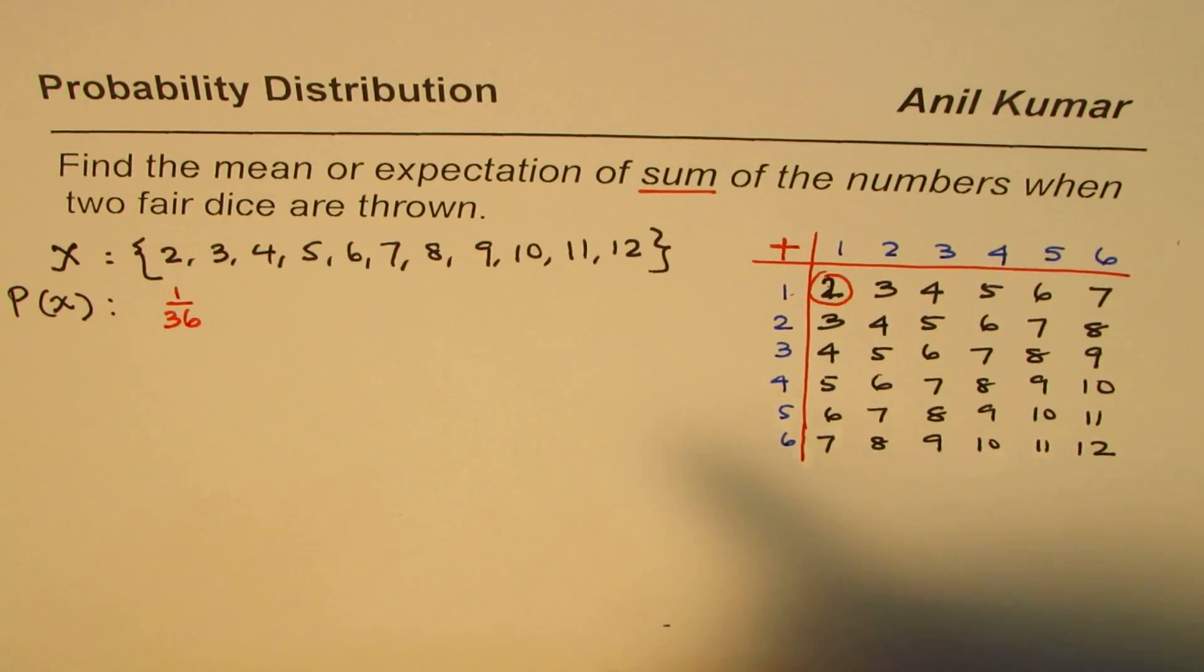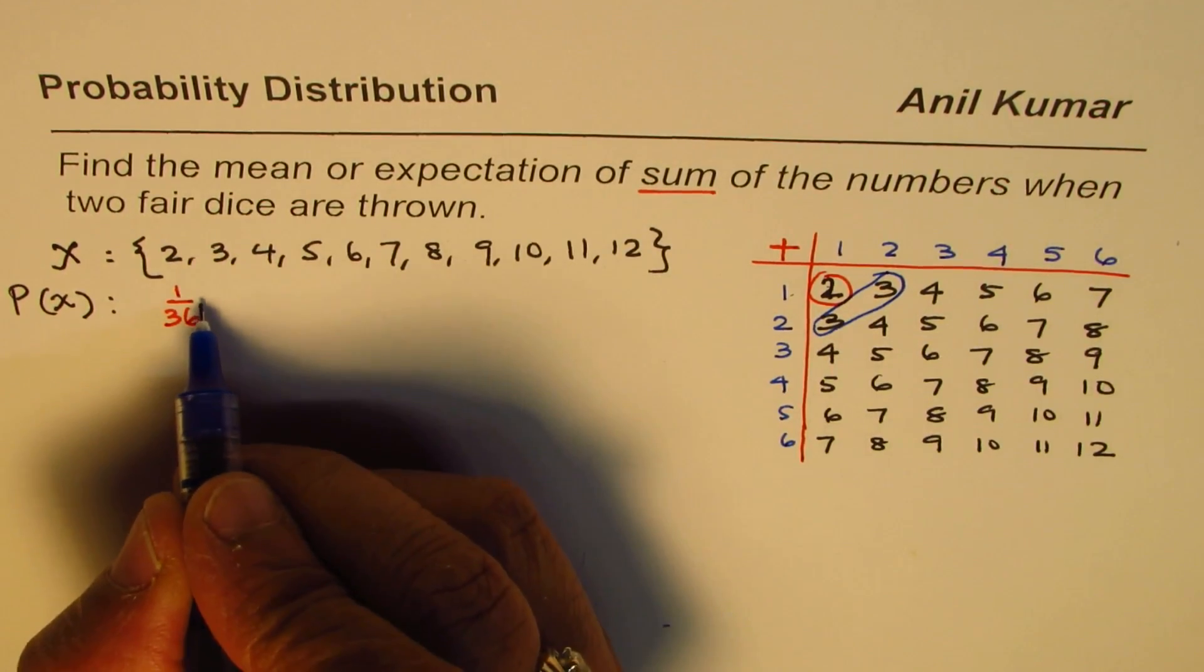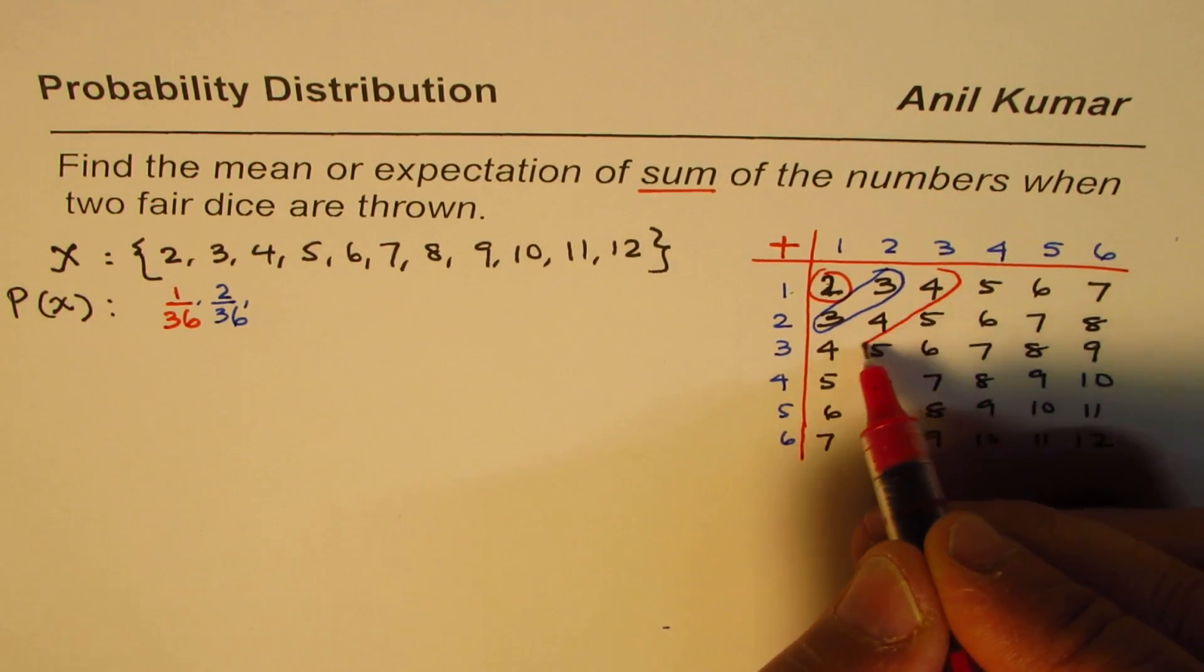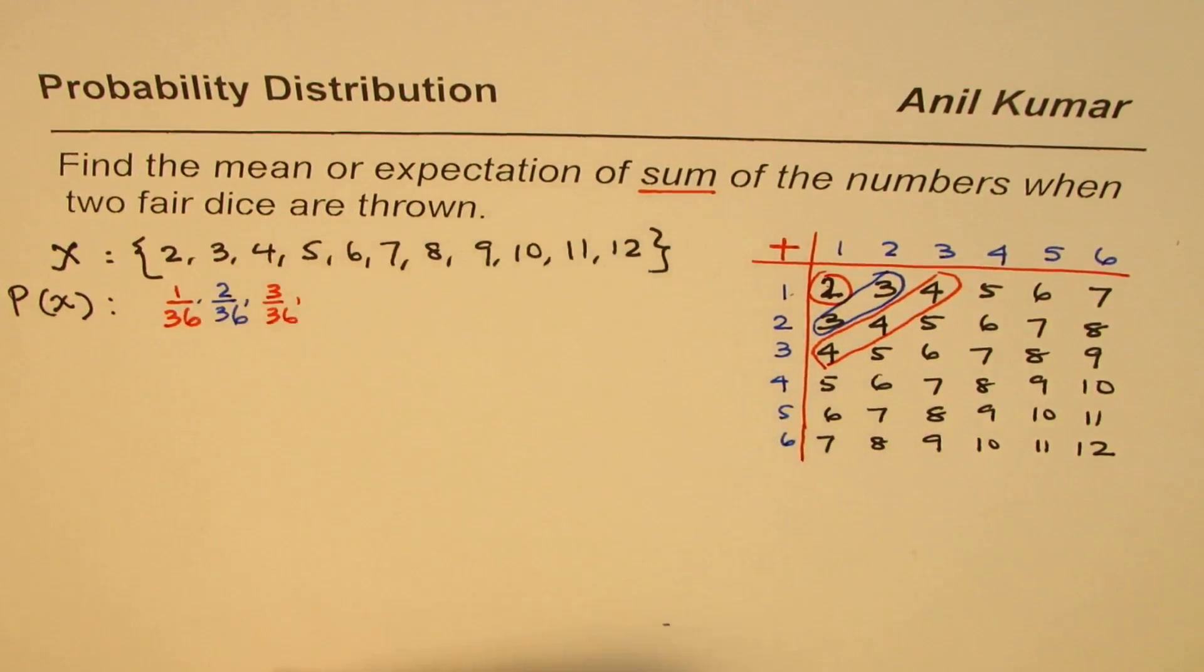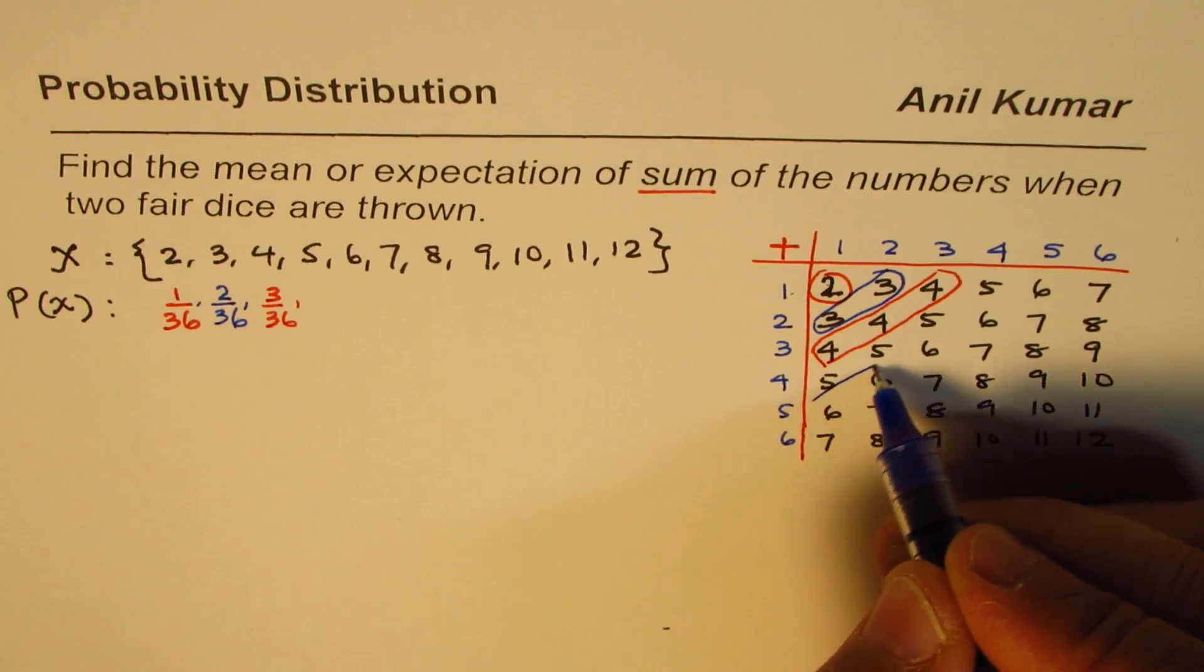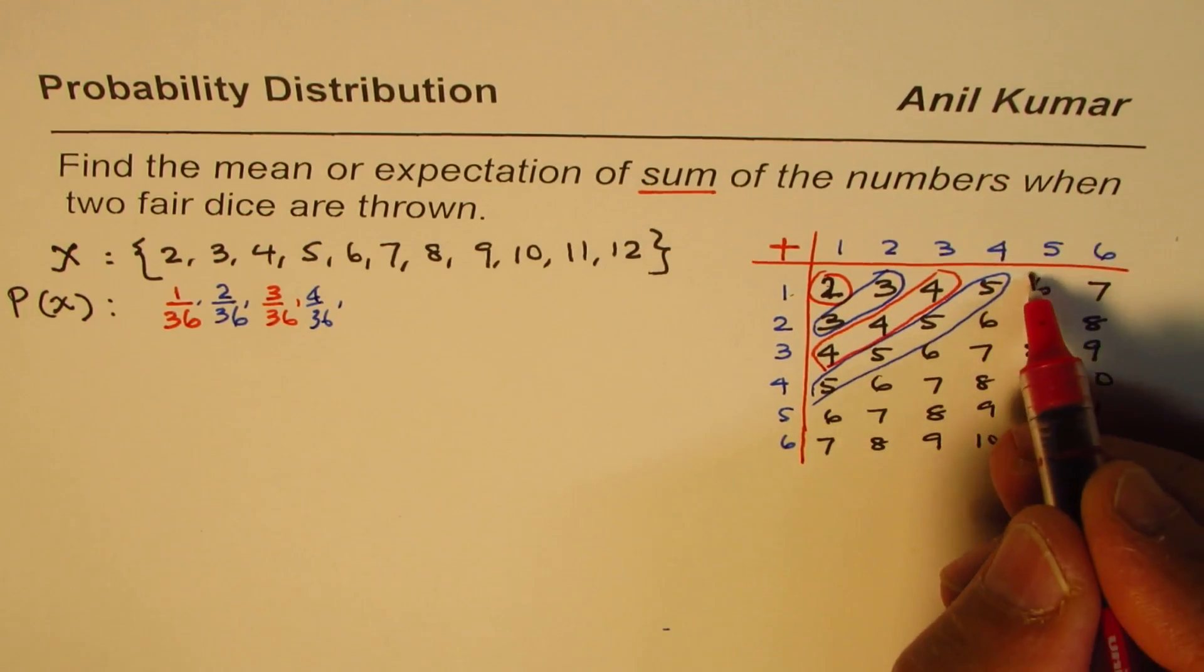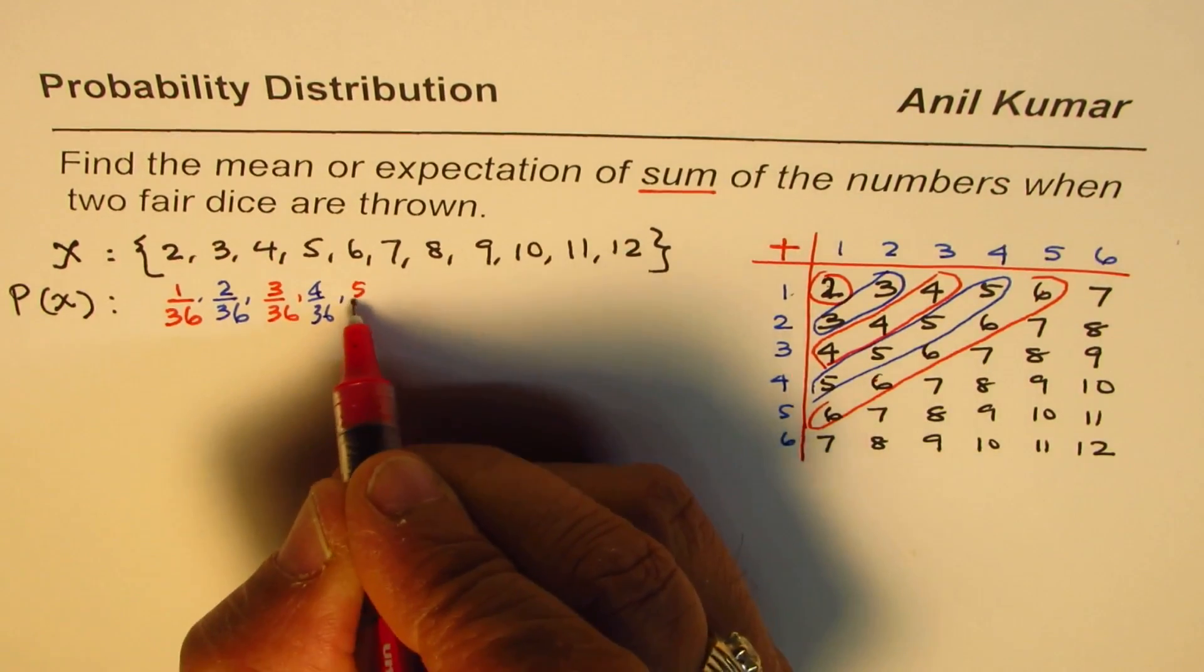Now for probability of getting 3: there are two 3s, so P(3) = 2/36. For 4, we have three 4s, so P(4) = 3/36. You can see the probability of each number is increasing. For 5, it's 4/36. For 6, counting them, we get 5/36.